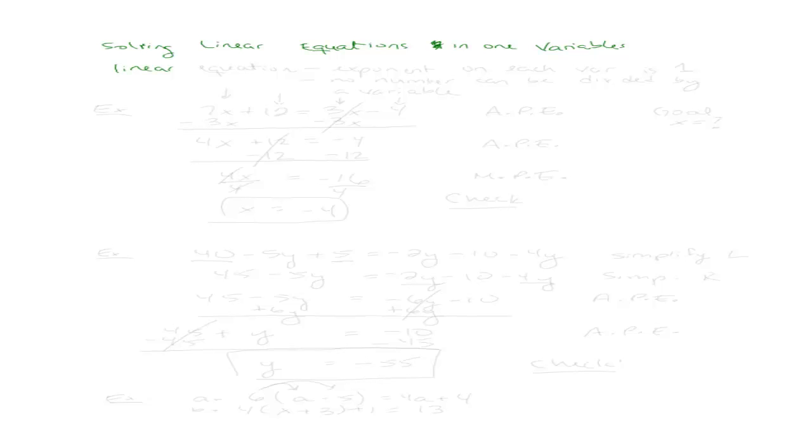So let's first of all quickly define a linear equation. A linear equation has to have two criteria. The criteria are that the exponent on each variable has to be a 1, and also no number can be divided by a variable. So if these two criteria are met, then we know that we have a linear equation.